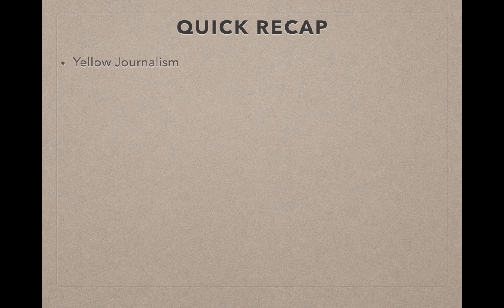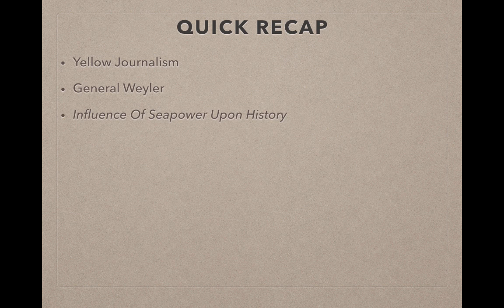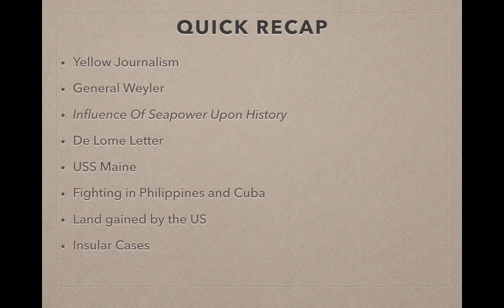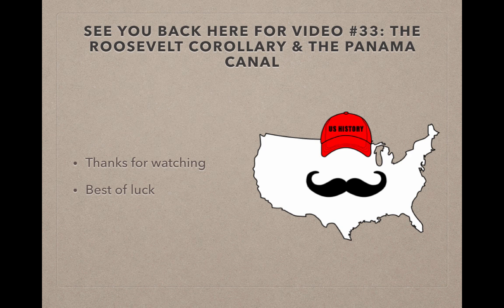Quick recap: Yellow journalism involved exaggerated news stories. General Weiler committed atrocities in Cuba. The DeLome letter called McKinley weak. The USS Maine mysteriously exploded in Havana. The war was fought in the Philippines and Cuba. Land gained by the U.S. included Guam, Puerto Rico, and the Philippines. The Insular Cases said Constitutional rights don't necessarily apply to newly acquired land, and the Platt Amendment gave the U.S. Guantanamo Bay. Thanks for watching — see you for video 33 on the Roosevelt Corollary and the Panama Canal.